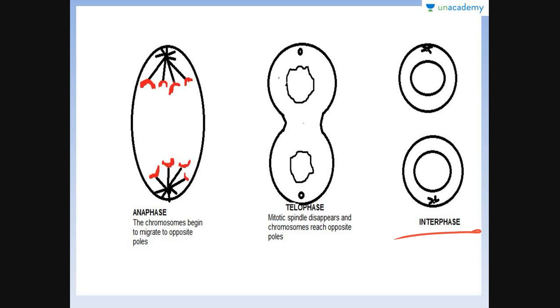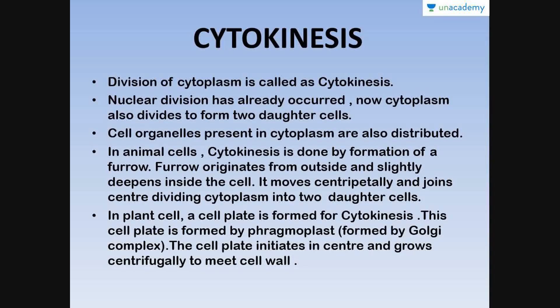Telophase is followed by cytokinesis, and then comes interphase again. Cytokinesis is the division of the cytoplasm. In animals, a furrow develops from outside and deepens into the cell in a centripetal fashion — from outside to center. In plant cells, a cell plate is formed in the middle by a substance called phragmoplast, produced by the Golgi complex. The cell plate initiates from the center and grows centrifugally — from inside to outside — finally meeting the lateral cell wall to divide the single cell into two daughter cells.